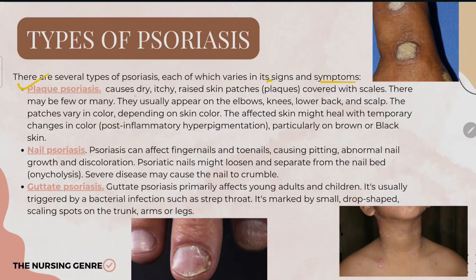There are several types of psoriasis, each varying in signs and symptoms. Plaque psoriasis causes dry, itchy, raised skin patches covered with scales. There may be few or many patches, and they usually appear on the elbows, knees, lower back, and scalp. The patches vary in color depending on skin tone.